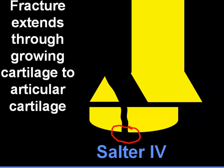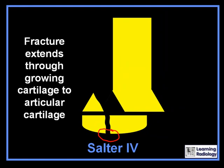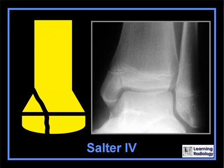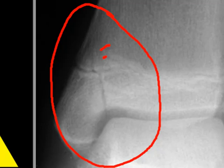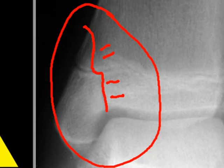Because the fracture extends through the growing cartilage, it frequently results in angular deformities or growth disturbances. Here is an example of a Salter-Harris 4 fracture of the distal tibia. You can see a linear radiolucency through the metaphysis and a linear radiolucency through the epiphysis — the fracture extends through the metaphysis, through the epiphyseal plate, and down through the epiphysis to the articular cartilage.